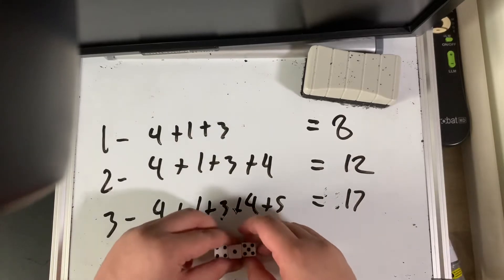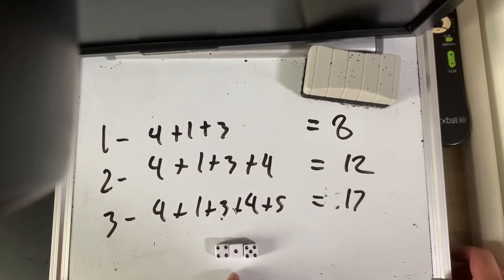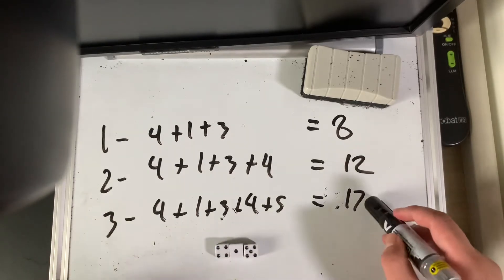Well, the trick is add up all the numbers here, 4 plus 1 plus 5, that's going to be 10, then add 7. 10 plus 7, 17.